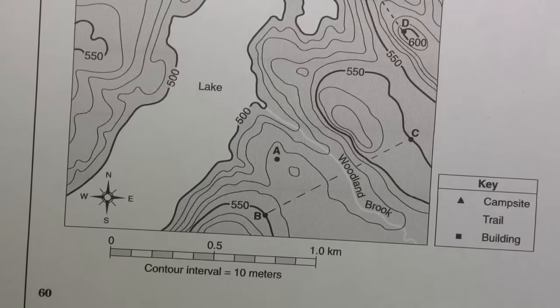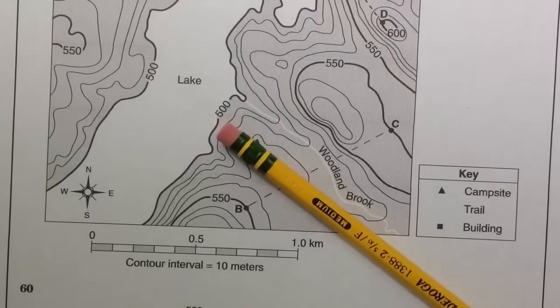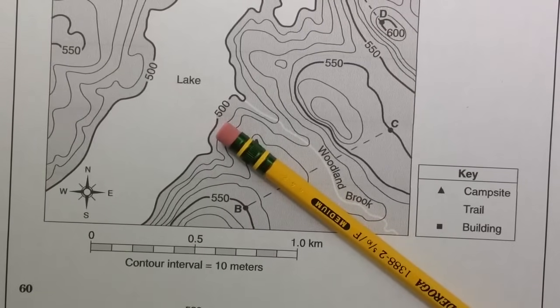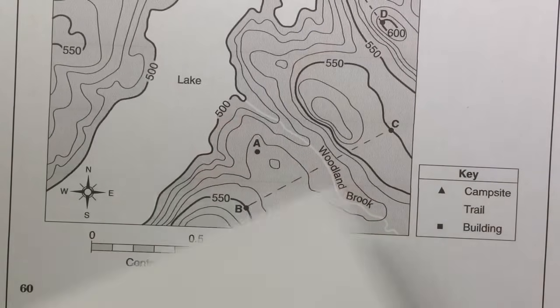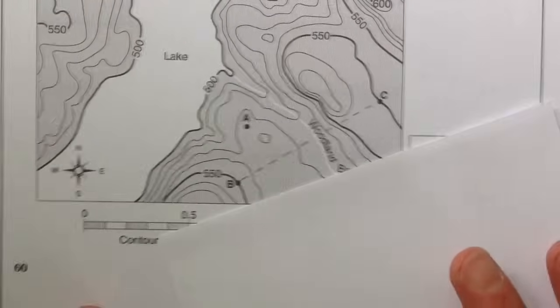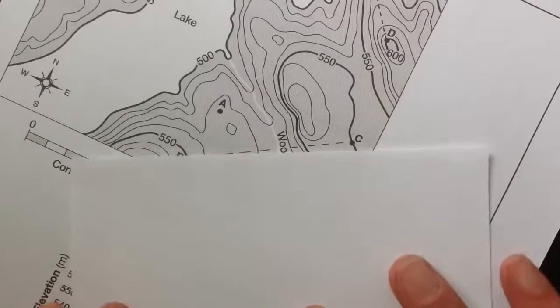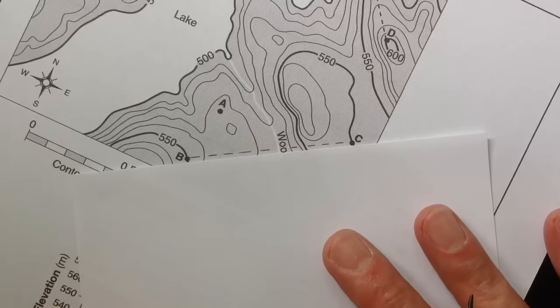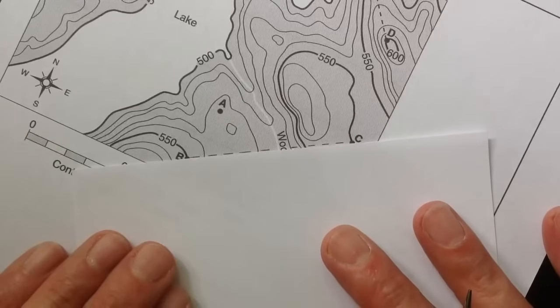So what you will need is a pencil, and you definitely want to use a pencil, and a piece of scrap paper. I have a small piece of scrap paper. And what you want to do is take your scrap paper and line it up along the line right there, on line BC.